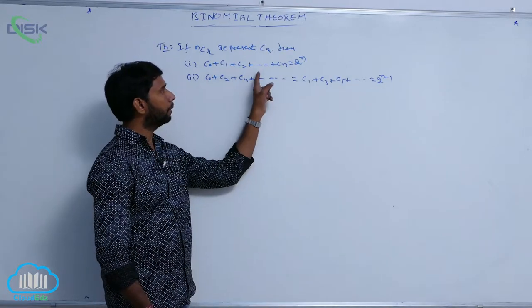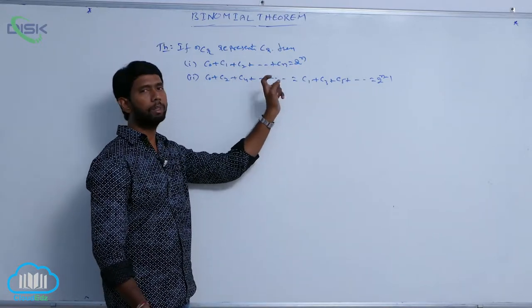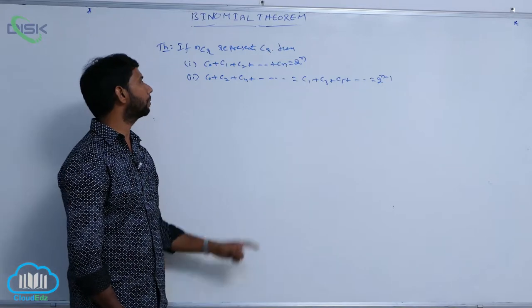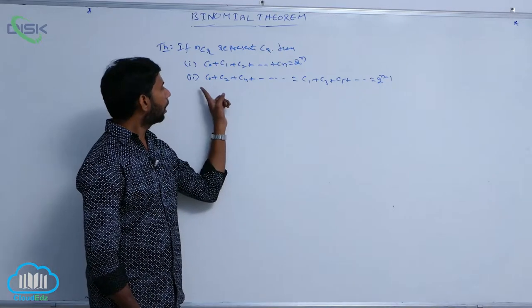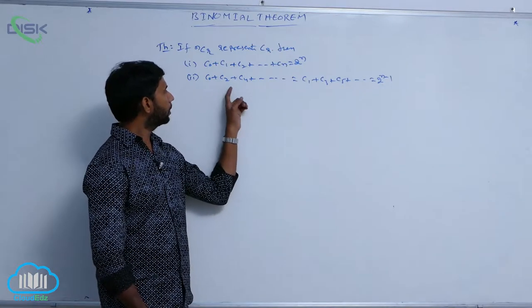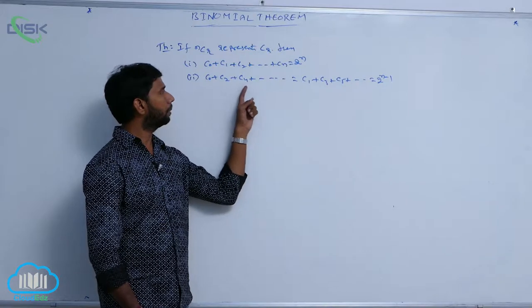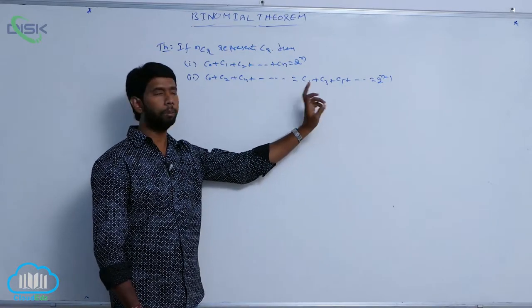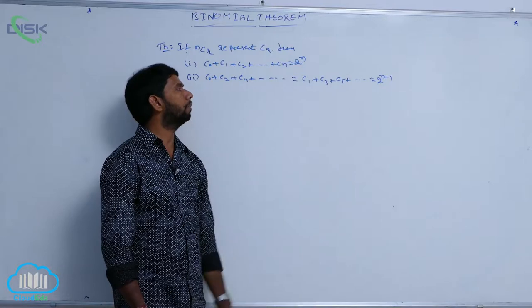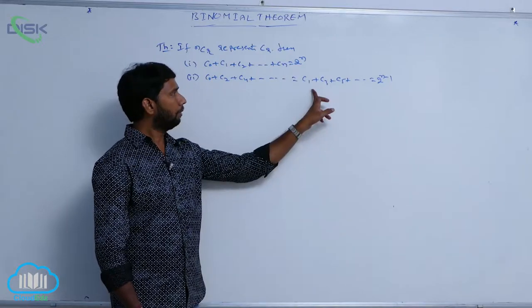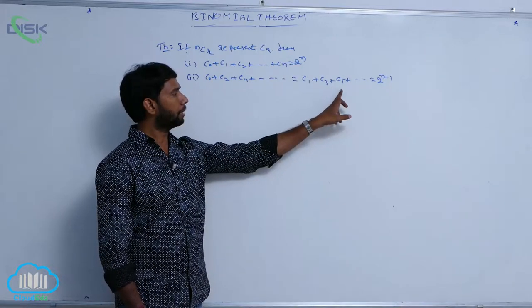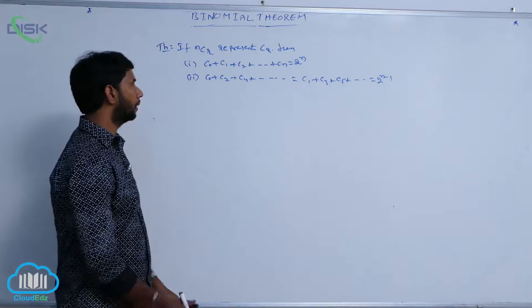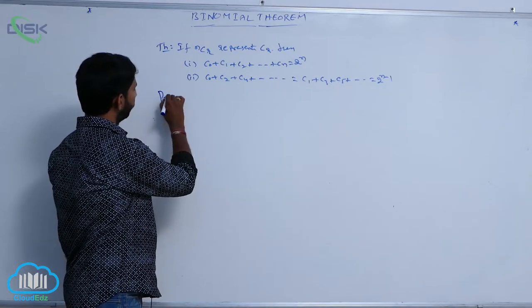So, the sum of all binomial coefficients is equal to 2ⁿ, and the sum of even binomial coefficients C₀ + C₂ + C₄ + ... equals the sum of odd binomial coefficients C₁ + C₃ + C₅ + ... equals 2ⁿ⁻¹. Then, it is a proof.